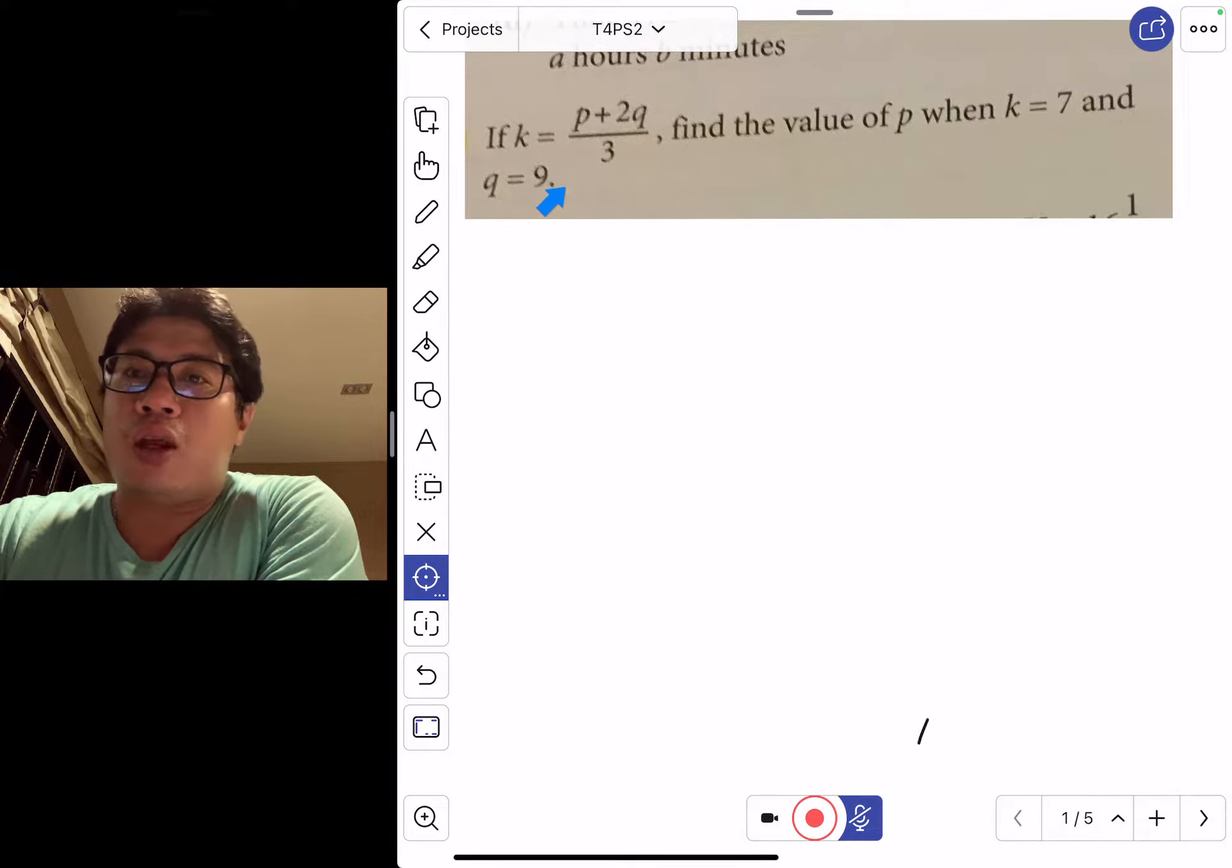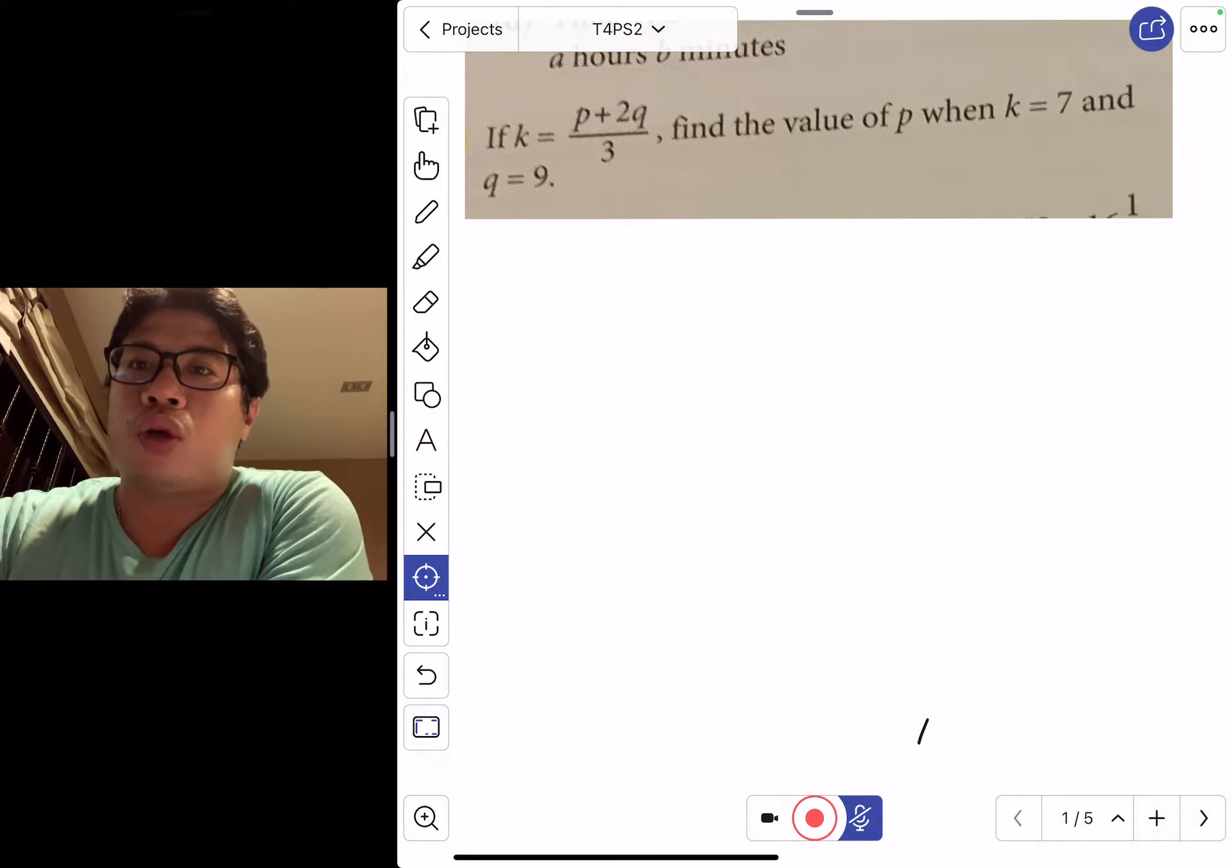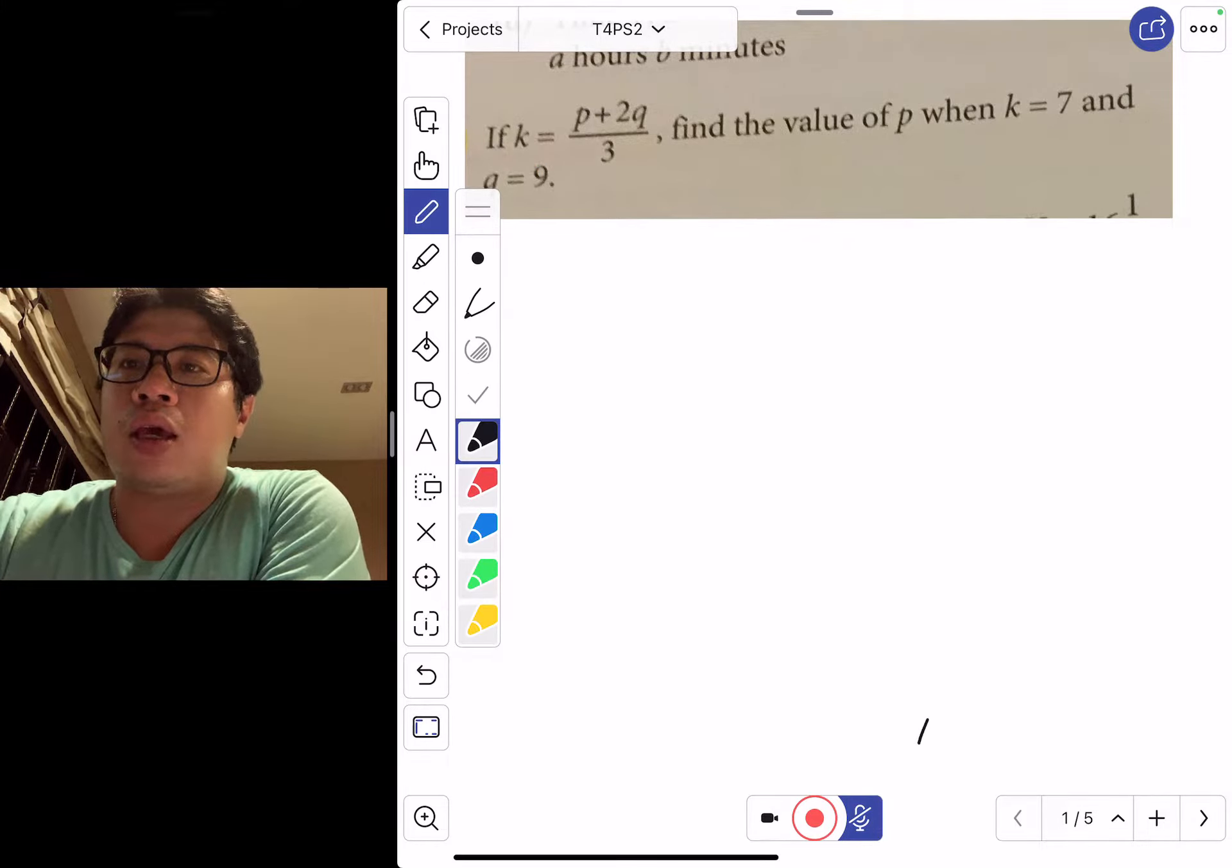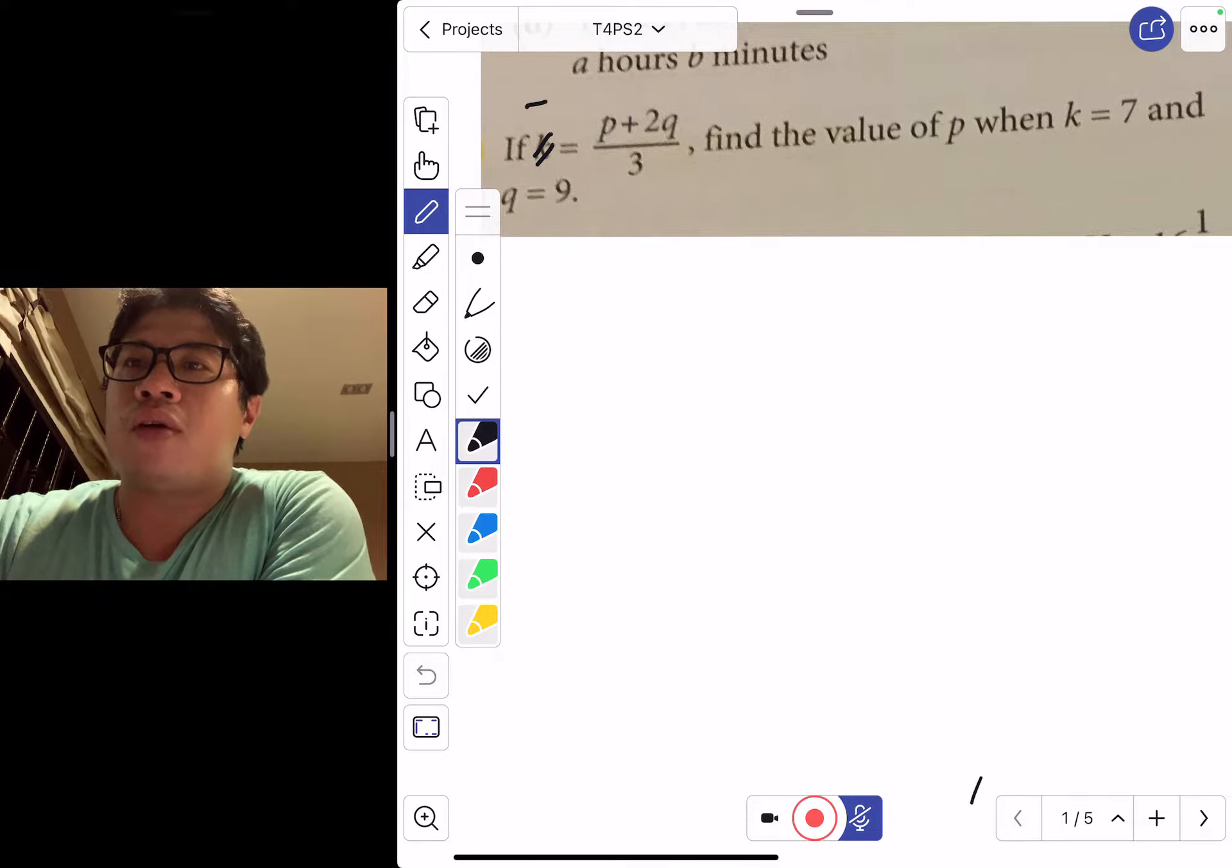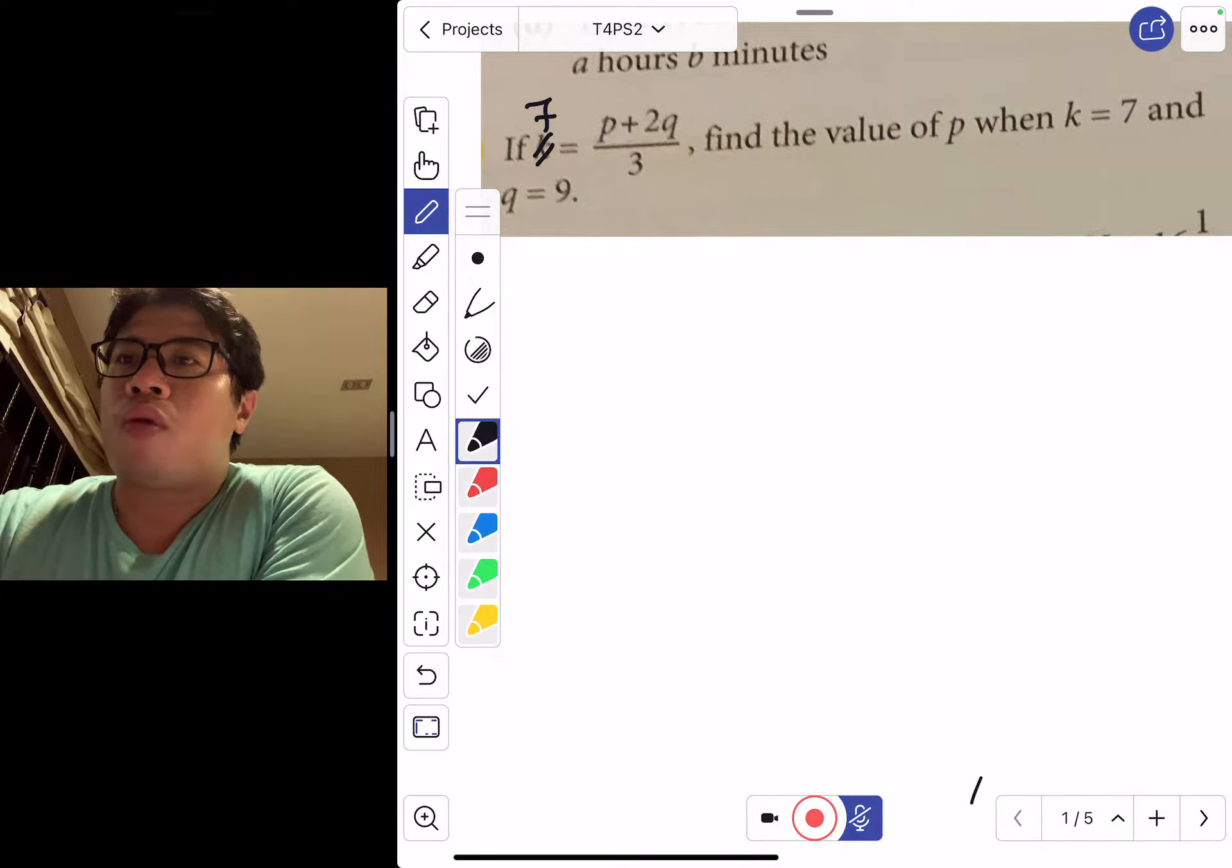You are substituting the values of k and q into the question. So if you look at k equals p plus 2q over 3, it means that you are replacing k with 7 and you are replacing q with 9.